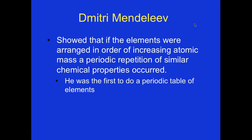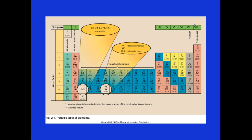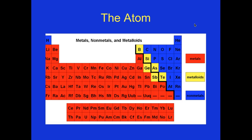Dmitri showed that if elements were arranged in order of increasing atomic mass, a periodic repetition of similar chemical properties occurred. He was the first to create a periodic table of elements. Now we have a much larger table, divided into metals, metalloids, and non-metals.